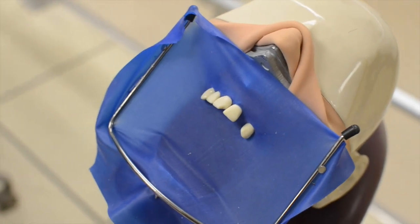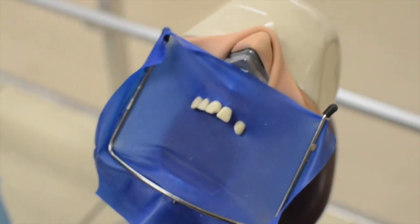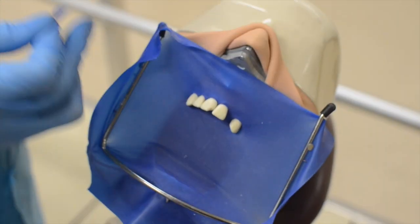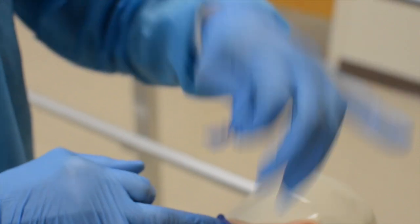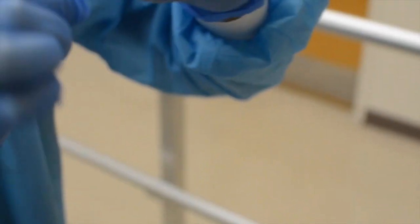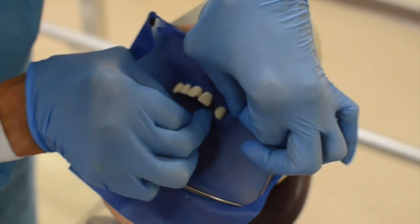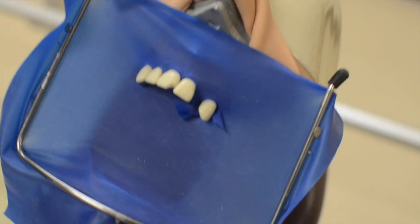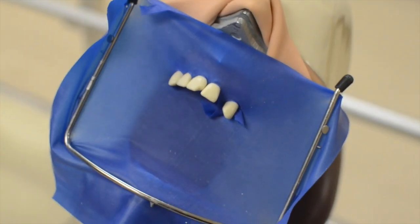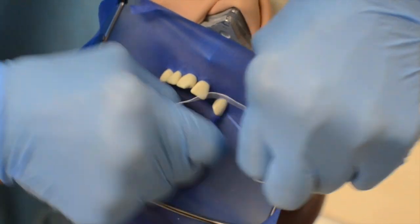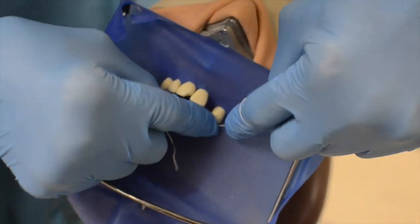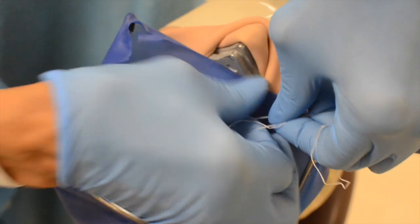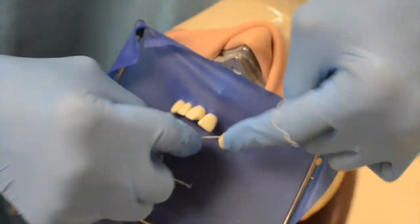But in a patient, sometimes you need a little help in keeping this rubber dam up without a clamp. Look what you can do. You can cut. See, I cut a little piece of the rubber dam there. You can cut this rubber dam, and then take that interproximally, and your rubber dam will stay up quite nice. Another alternative is to use a piece of dental floss.